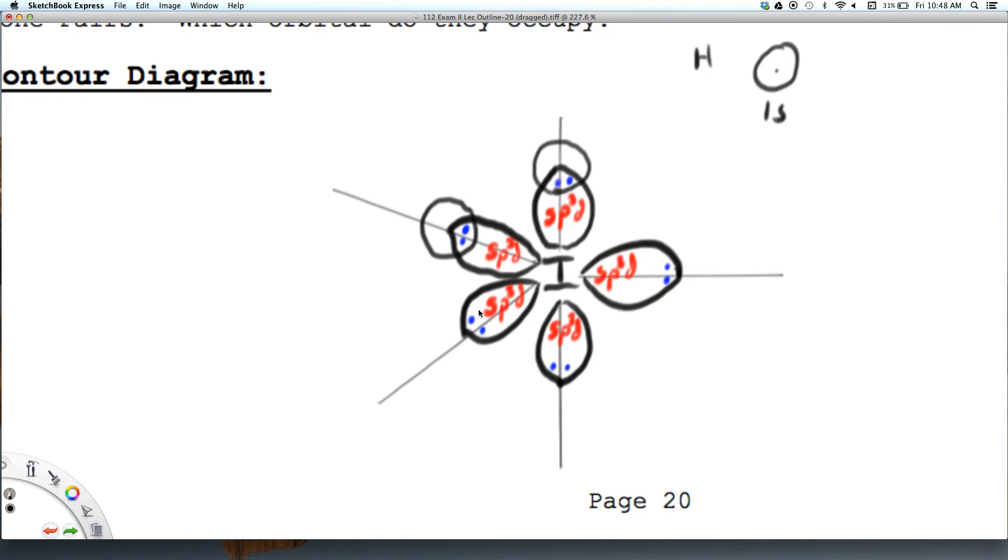Of course I just drew those in the lone pairs so there is only 3 of them. Okay, so let's reiterate that. These are my lone pairs so they do not have hydrogens as I erroneously drew them.